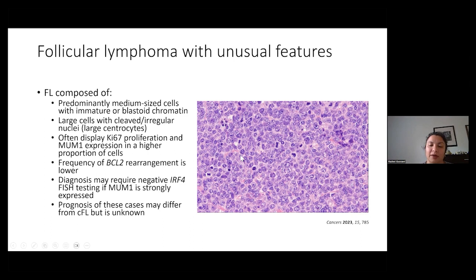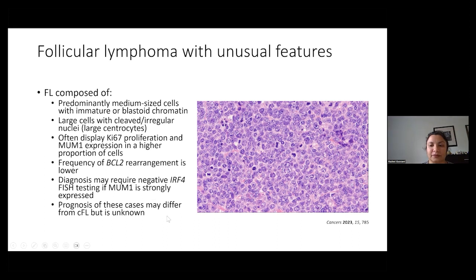The prognosis of these cases might differ from classic follicular lymphoma, but since it hasn't been carved out as an entity before, it's unknown. The WHO authors are hoping that by defining it in this way, any significant clinical differences from classical follicular lymphoma can be teased out. This entity has been described in the past, but usually only in small case reports or case series, and no one has actually studied it as a formal entity.